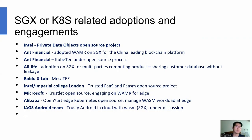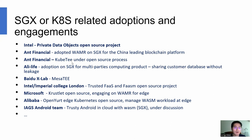Here we will give the SGX and Kubernetes related adoptions and engagements. Most Intel projects, such as the Private Data Objects open source project, can get benefits from using WAMR. Ant Financial from Alibaba adopted WAMR with SGX for a leading blockchain platform in China. Alibaba also adopted WAMR with SGX for multi-party computation. Baidu X-Lab and MesaTEE also integrated WAMR and its features. Other customers include Microsoft and Alibaba.